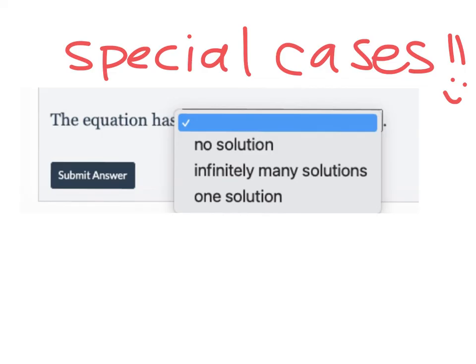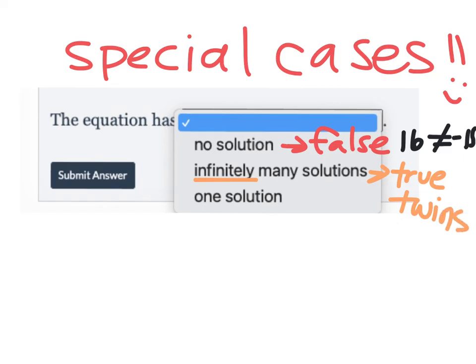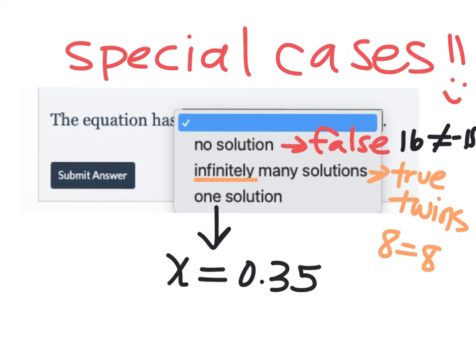So in conclusion, with these special cases, if it's a no solution equation, that means you get a false statement at the end. You get, like we got in our example, 16, which does not equal negative 15. So you get a false statement. If it's an infinitely many solution, that is where you get a true statement at the end. Or you also get those twins. So you get the one side that is equal to the other side. So that's what infinite looks like. And then the one solution equations, that's what we've been doing. You get an actual answer, like x equals 0.35. Okay, now you can use the back of this paper for your practice problems on delta math.